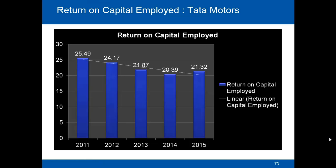Here is the Return on Capital Employed graph for Tata Motors. On the x-axis are the years and on the y-axis is the percentage of Return on Capital Employed. The return in 2011 was close to 25.5%, then showed a declining trend: 24% in 2012, around 21–22% in 2013, and finally 21.32% in 2015. This clearly shows Tata Motors had not done well between 2011 and 2015, as they were not using their resources well.